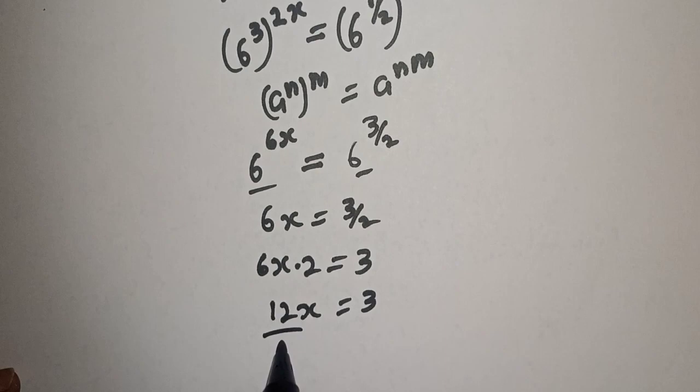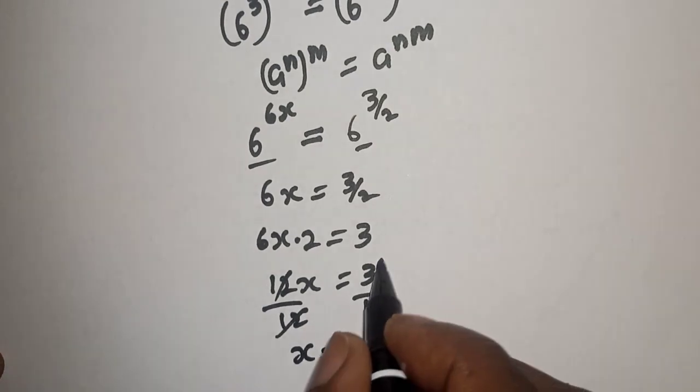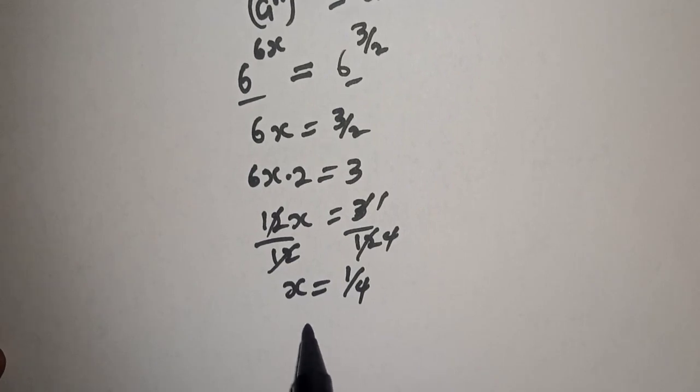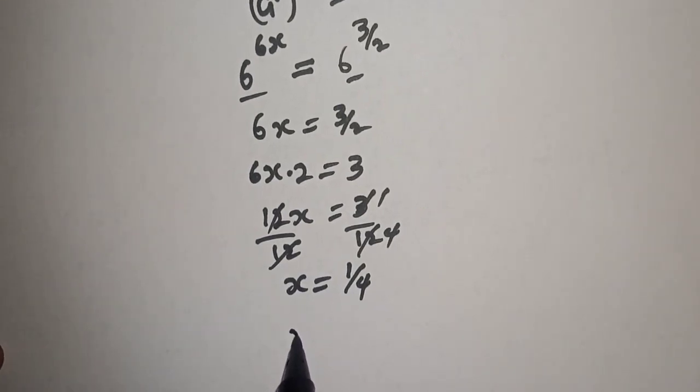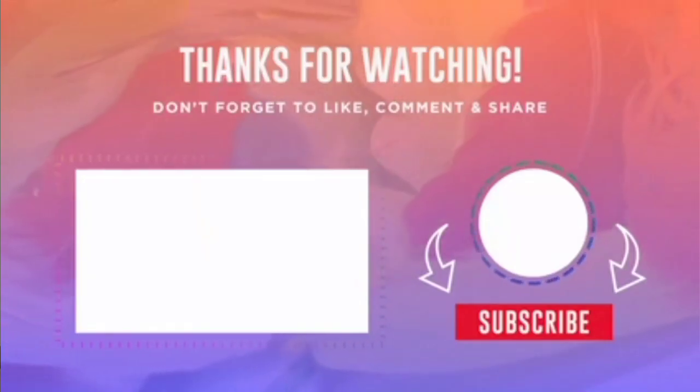Let's divide both sides by 12. Divided by 12, this will cancel. x is equal to 3 over 12, which is 1 over 4. Therefore our final answer is x is equal to 1 over 4. If you enjoyed the class, please don't forget to like, share, comment and subscribe. Thank you.